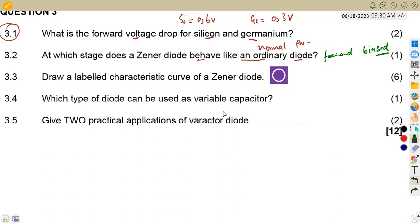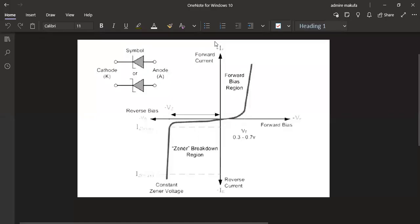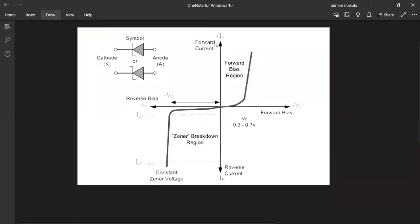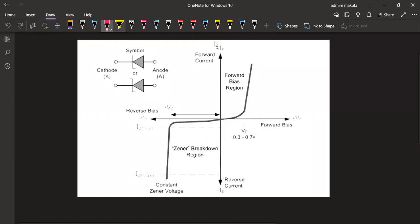On 3.3, draw a labeled characteristic curve of a Zener diode. That is six marks to draw. You have got a diagram that I want us to check. This is what we have on a Zener diode.